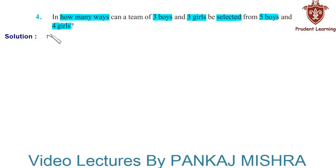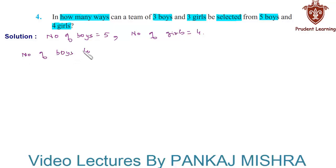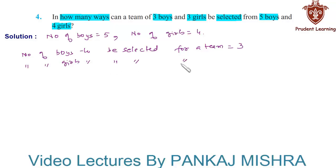Let us see the solution for this problem. Here we are given: number of boys is equal to 5, number of girls is equal to 4, and according to the problem, number of boys to be selected for a team is 3, and number of girls to be selected for a team is 3. Now we know that 3 boys can be selected from 5 boys in 5C3 ways, and 3 girls can be selected from 4 girls in 4C3 ways. Therefore, by the multiplication principle,